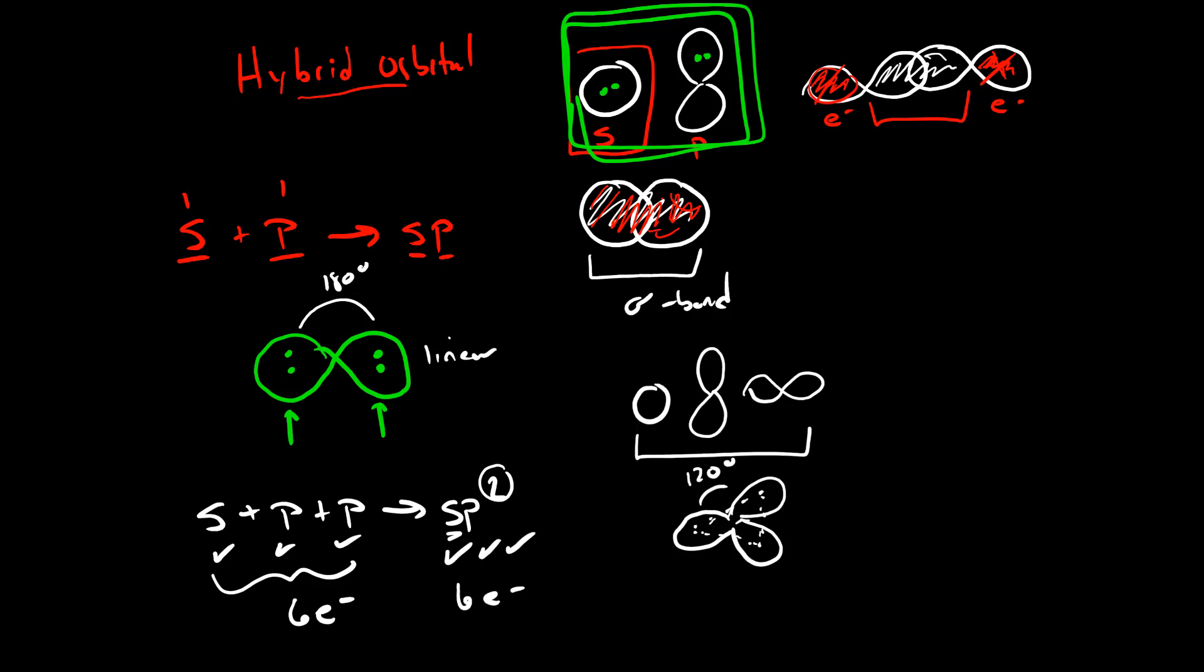If we go one step further and take all three p orbitals, so we do an s plus a p plus a p plus a p, then these produce an sp3 hybrid, which will have four equal lobes. So we'll show this one, two, three, four lobes. Each can hold two electrons.